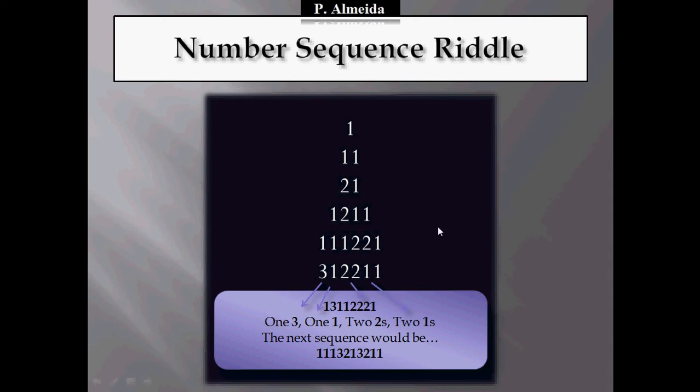So every time, every time I have a row, I'm going to say how many numbers I have of each. So what do I have now? 1, 3, so 1, 3.